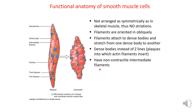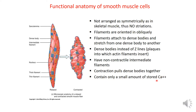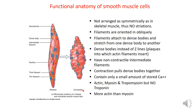Smooth muscle has non-contractile intermediate filaments that connect the dense bodies together. Contraction pulls the dense bodies together. Smooth muscle contains a small amount of stored calcium present in caveolae in the cell membrane. It contains actin, myosin, and tropomyosin, but no troponin. Tropomyosin is present but its function is not clearly known. There is more actin than myosin.